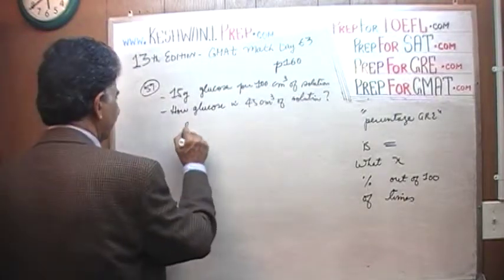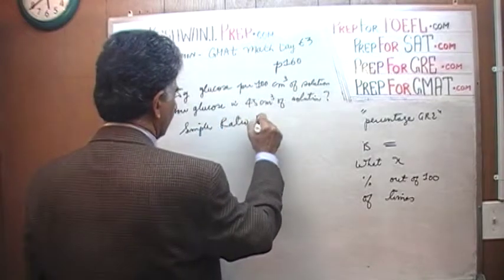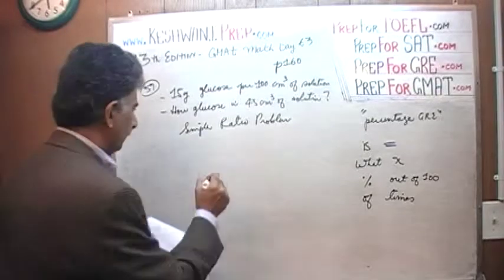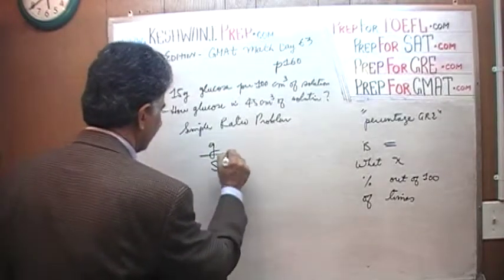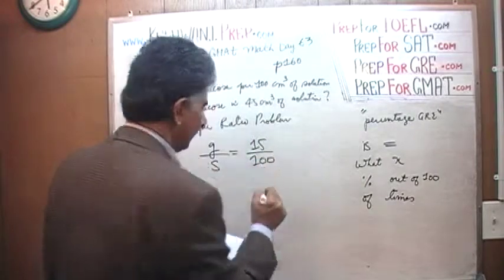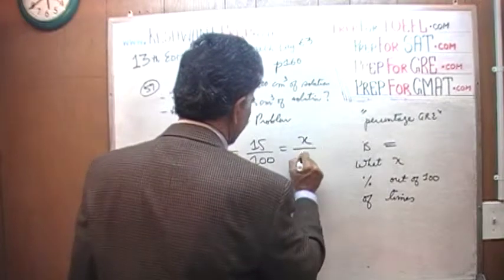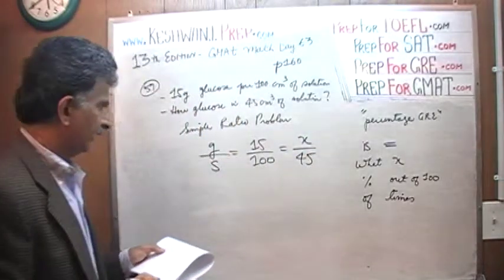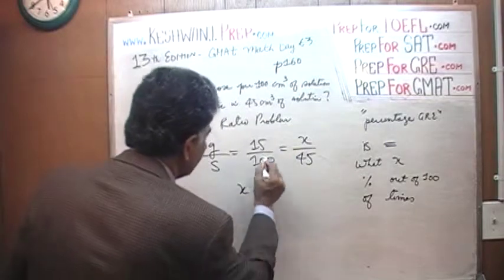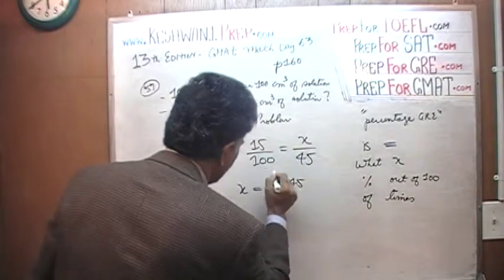If you want to do it properly, it's a simple ratio problem. It's a very simple ratio problem. Here's your glucose, here's your solution. We are told that there are 15 grams of glucose out of 100 cubic centimeters of solution. The question is, how much in 45? That's it. Let's just solve for x.